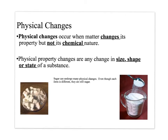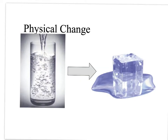Physical changes occur when matter changes its property but not its chemical nature — it stays the same substance. Physical changes include any change in size, shape, or state of a substance. Look at these pictures of sugar: sugar can undergo many physical changes. You've got sugar in cubes and regular granulated sugar, but they are still the exact same formula — the same substance, even though they look different. Physical changes can also be changes in state.